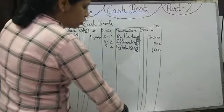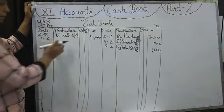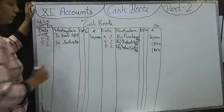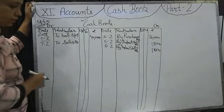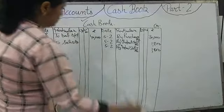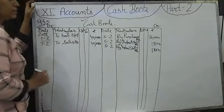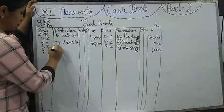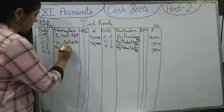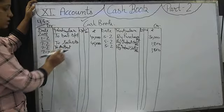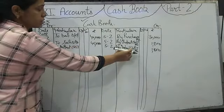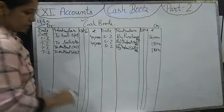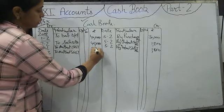Next transaction on 7th February: sold goods. Now we are selling goods, so money will come in — we write on the debit side. Date: 7th February. From where is money coming? Because of sale of goods. We write: To Sales Account, Rs. 45,000. With sale, we also receive CGST and SGST — that received CGST is known as output CGST, and output SGST account. At 6% of 45,000, that comes to Rs. 2,700 each.